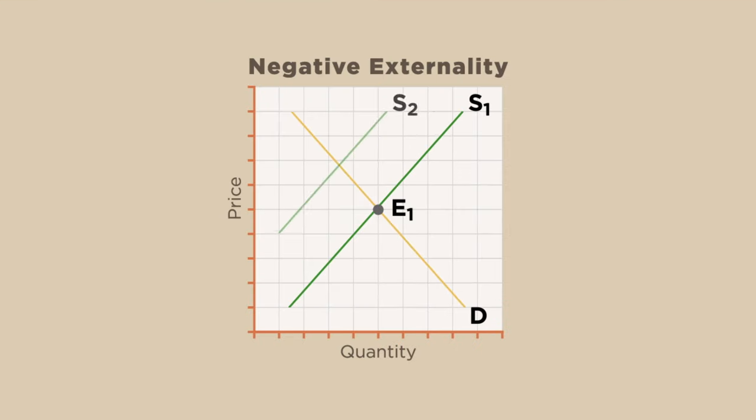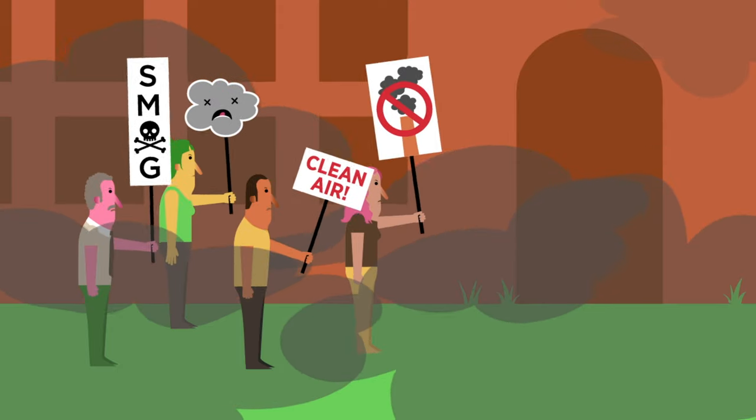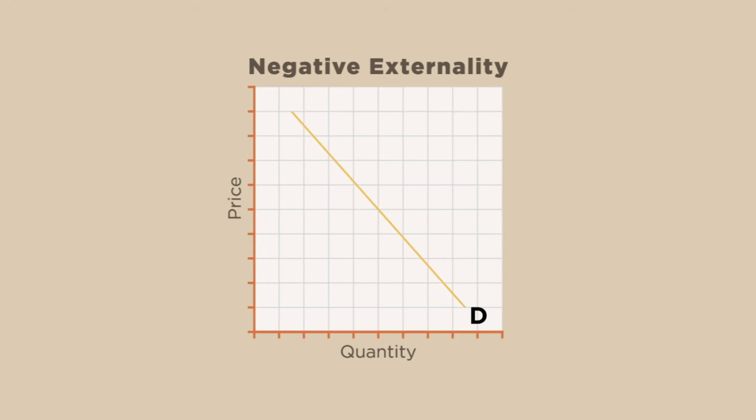...and returns polluted air to the atmosphere, which creates a potential health risk to anyone who breathes it. If the firm were paying the full cost of production, it would return clean air to the atmosphere. Instead, if society wants clean air, society must pay to clean it. So, in this case, pollution represents the shifting of some of the cost of production to society, a negative externality.